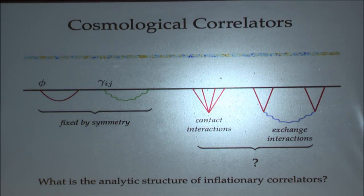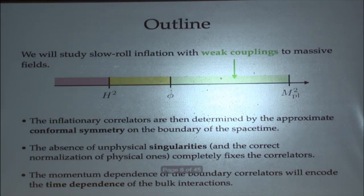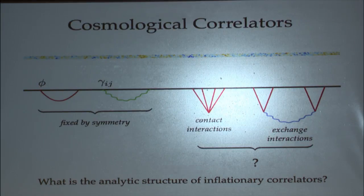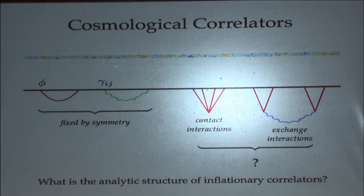In cosmology, we don't measure scattering amplitudes — we measure correlation functions. But in principle we have very similar structures. We can have contact interactions and exchange interactions, and we would like to understand what's the allowed analytic structure of both contact and exchange interactions for the time being at tree level.